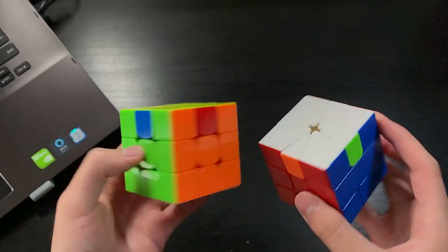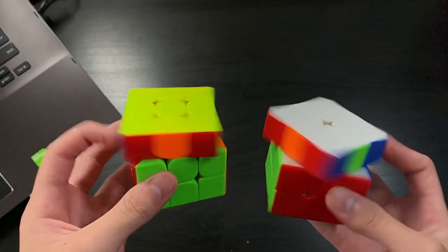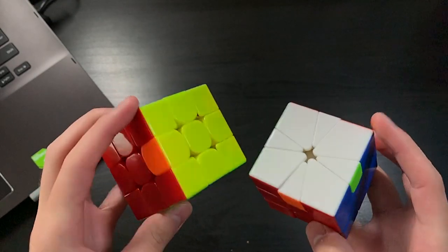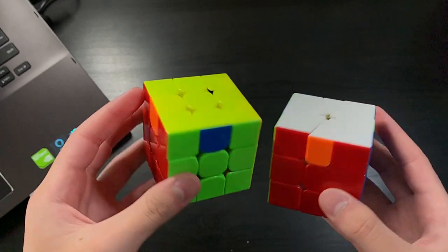Basically, these cases share the fact that all the corners are solved. However, there are only 4 different EPLL cases on 3x3, while square one has 99.